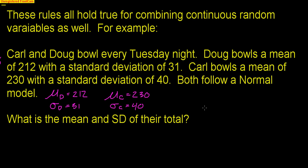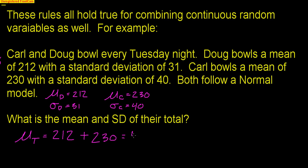What is the mean and standard deviation for their total? Finding the mean for T, their total, is simple: just take Doug's expected 212 plus Carl's expected 230, and 212 plus 230 gives 442. Finding the expected mean is always really, really simple.